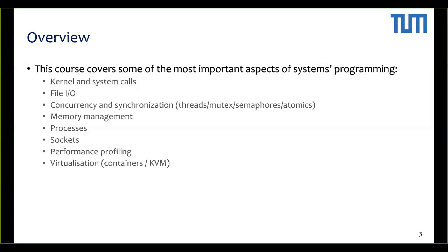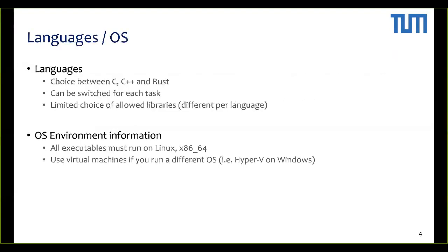The format will look like this: we'll talk about a topic for about half an hour, and then you'll get some tasks to work on. We decided for this lab to give you a choice of programming language for each task, so you can choose between C, C++, or Rust, and see what the trade-offs are between these languages.